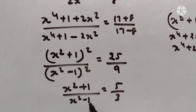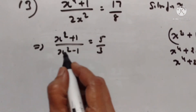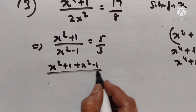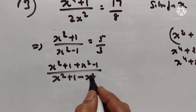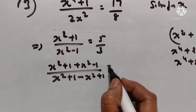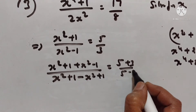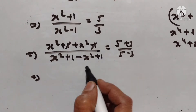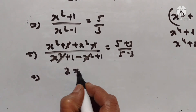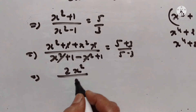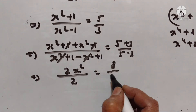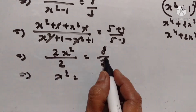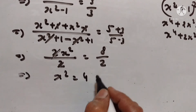Let's apply componendo and dividendo again: this plus this upon this minus this. So x squared plus 1 plus x squared minus 1 upon x squared plus 1 minus x squared minus 1 is equal to 5 plus 3 upon 5 minus 3. The 1s cancel, x squareds cancel: 2x squared upon 2 is equal to 8 upon 2. So x squared is equal to 4.